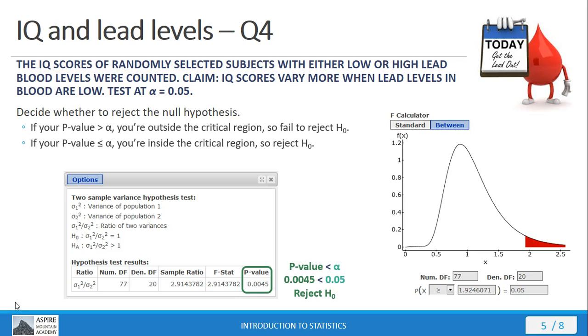Therefore, we reject the null hypothesis. Notice we get the same thing if we use the test statistic. So 2.91 is our test statistic. 2.91 puts us somewhere out here. That's inside the tail of our distribution. We're inside the region of rejection. Therefore, we reject the null hypothesis.